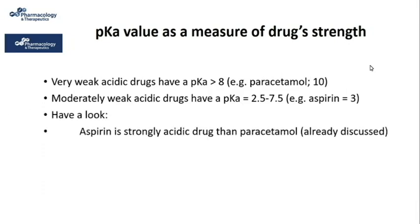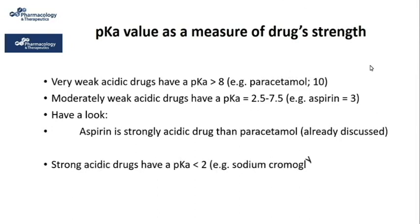Think about it and recall your memory, or go back in the video to compare the aspirin and paracetamol ionization scenarios — you can figure out the strength differences between the two acids. On the other hand, strong acidic drugs have a pKa less than 2; for example, sodium cromoglycate with pKa = 1.9.